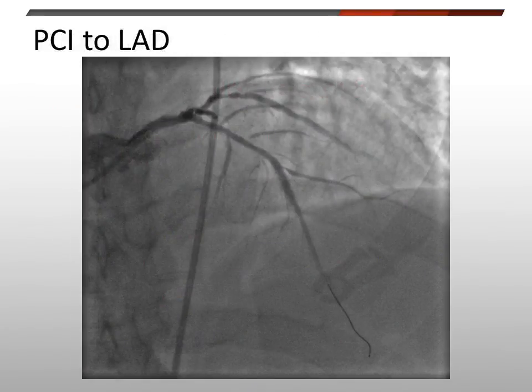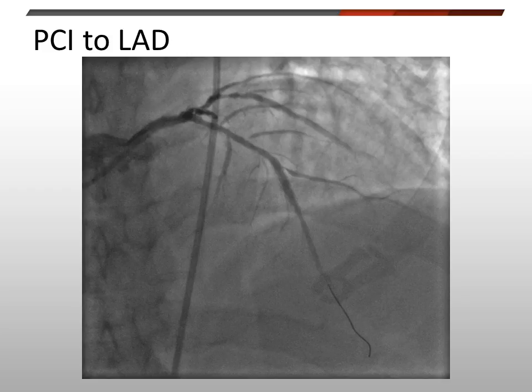The plan was to perform PCI to the LAD. The decision was whether to use a simple one-stent technique or commit to a more complex technique. I chose to perform a simple technique with stent implantation on the pressure wire already across the stenosis. A drug-eluting 2.5 by 12 mm stent was deployed in the LAD across the focal stenosis and across the diagonal 3 branch.